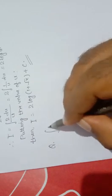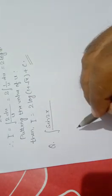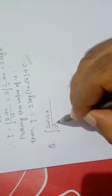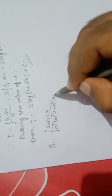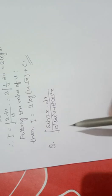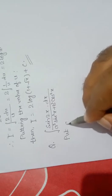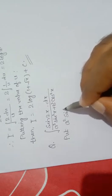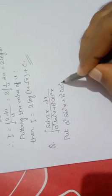Next, see another question. Integrate sin 2x upon a² sin²x plus b² cos²x dx. Again, see the denominator is the complex term. So substitute the denominator — put a² sin²x plus b² cos²x equal to u.